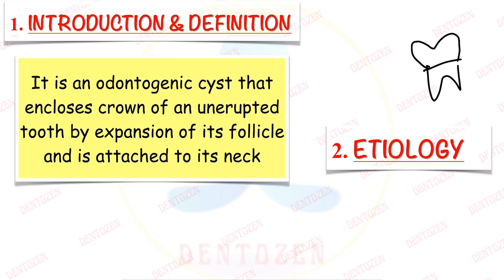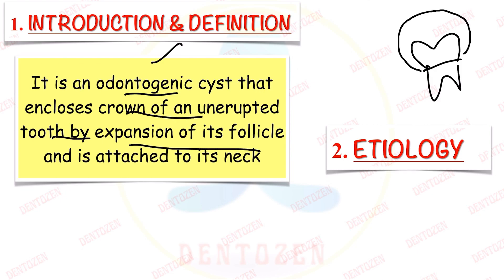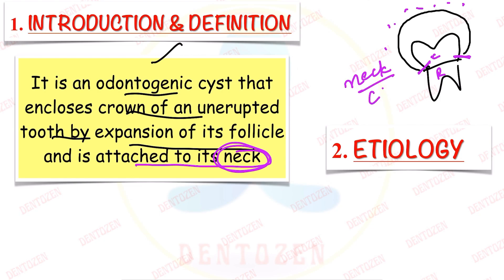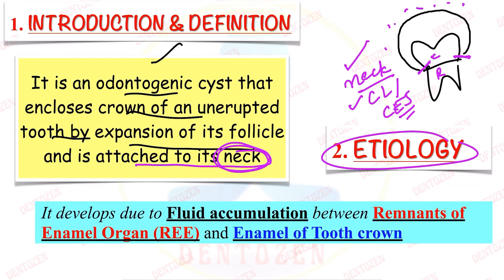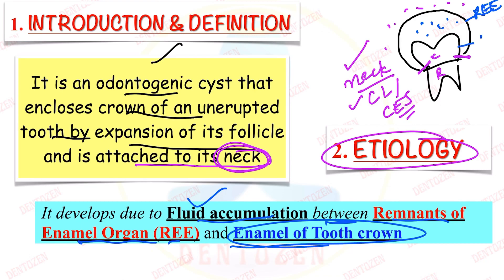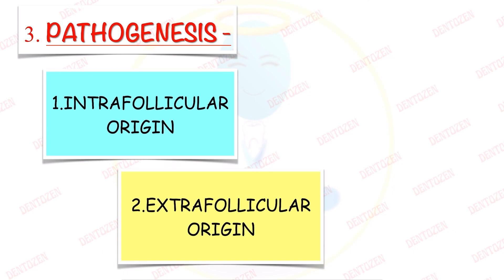Definition: this is an odontogenic cyst that encloses the crown of an unerupted tooth by the expansion of its follicle, and it is attached to the tooth at the neck — the cervico-enamel junction (CEJ). That is a viva question: where is the cyst attached? It is attached at the neck, cervical line, or cemento-enamel junction. Etiology: it develops by fluid accumulation between remnants of the enamel organ (reduced enamel epithelium) and the enamel of the crown of the unerupted tooth.